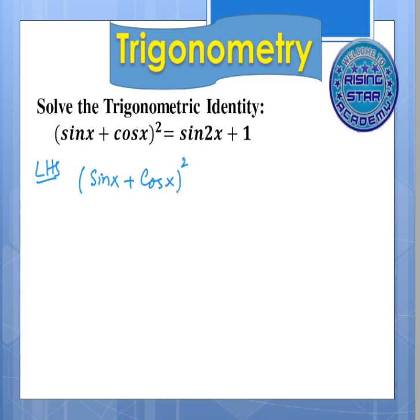Now, we know the algebraic identity that is a plus b whole square equals a square plus b square plus 2ab. So I would apply over here, this is my a value, this is my b value.